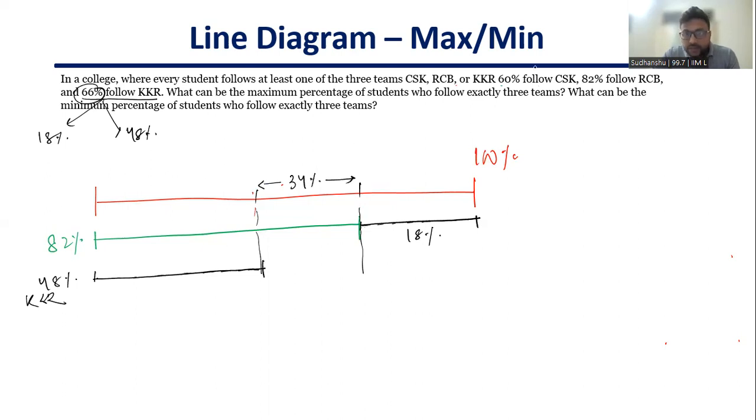I have now 60% CSK to be filled. How do I fill it? So 60% CSK if I have to fill, randomly I picked up and the color is yellow. That's the kind of love. So 60% follow CSK. So how do I put that 60%? Let's say I put 34% here. I put 34% here so that it is common with RCB, but it is not common with KKR. I'm avoiding all three falling in place.